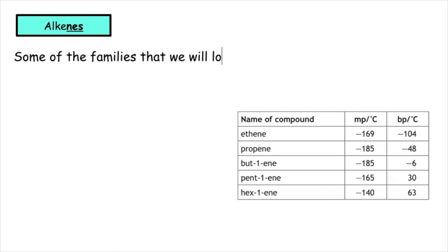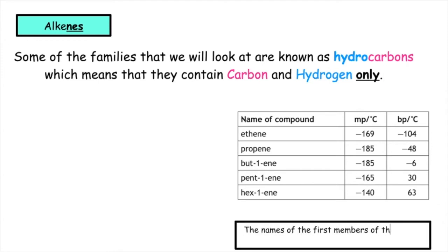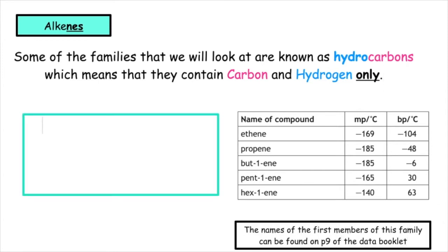Some of the families we will look at are known as hydrocarbons, which means they contain carbon and hydrogen only. The names of the first members of this family can be found on page 9 of the data booklet.